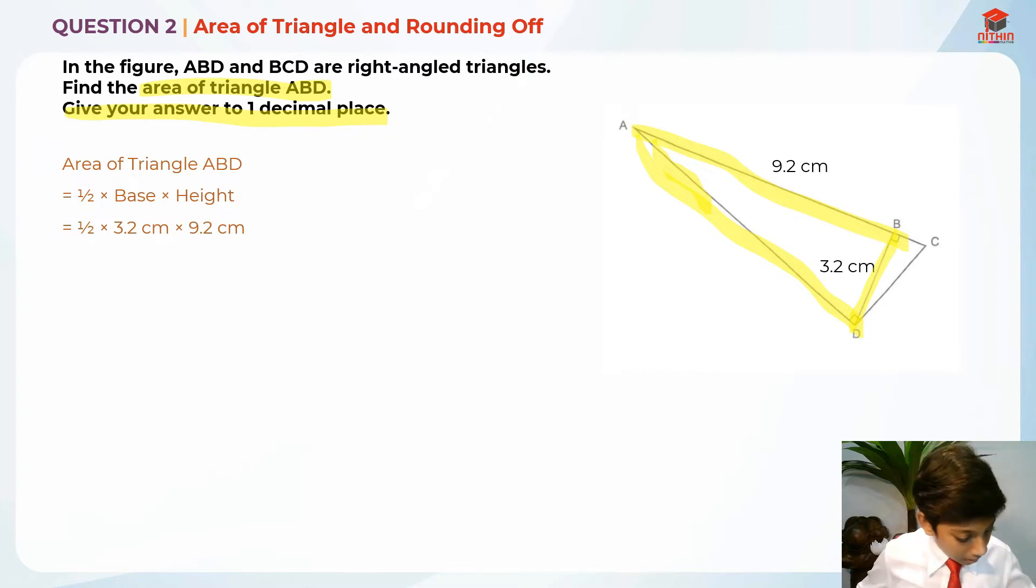This is because they meet at a right angle because they are right angle triangles. That is why we can count these two as the base and the height. So half times 3.2 times 9.2 cm is actually 14.72 cm square.